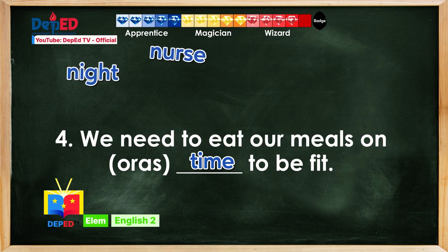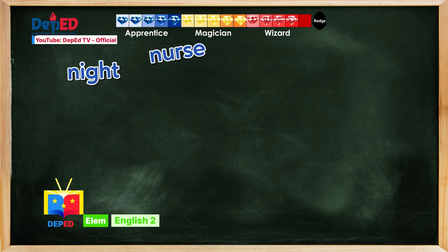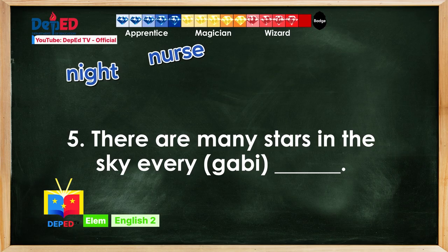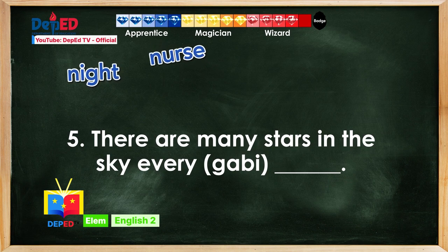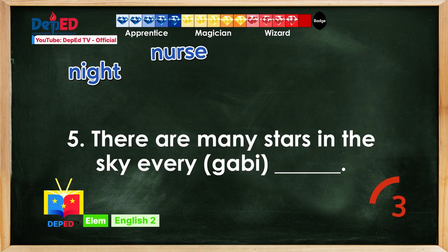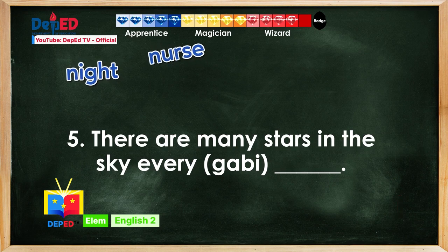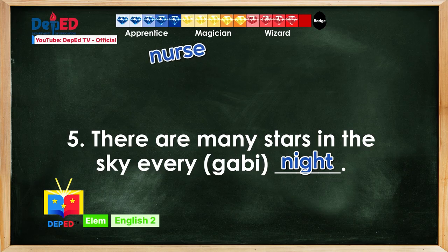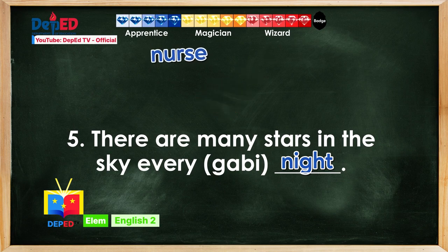We only have two choices now — choose wisely, kids. Down to the last sentence: There are many stars in the sky every blank. What is the correct English translation of the word in parenthesis? Wow, that was quick! What did you choose? You are really good — the correct answer is night! Last gem collected. Repeat after me: There are many stars in the sky every night.